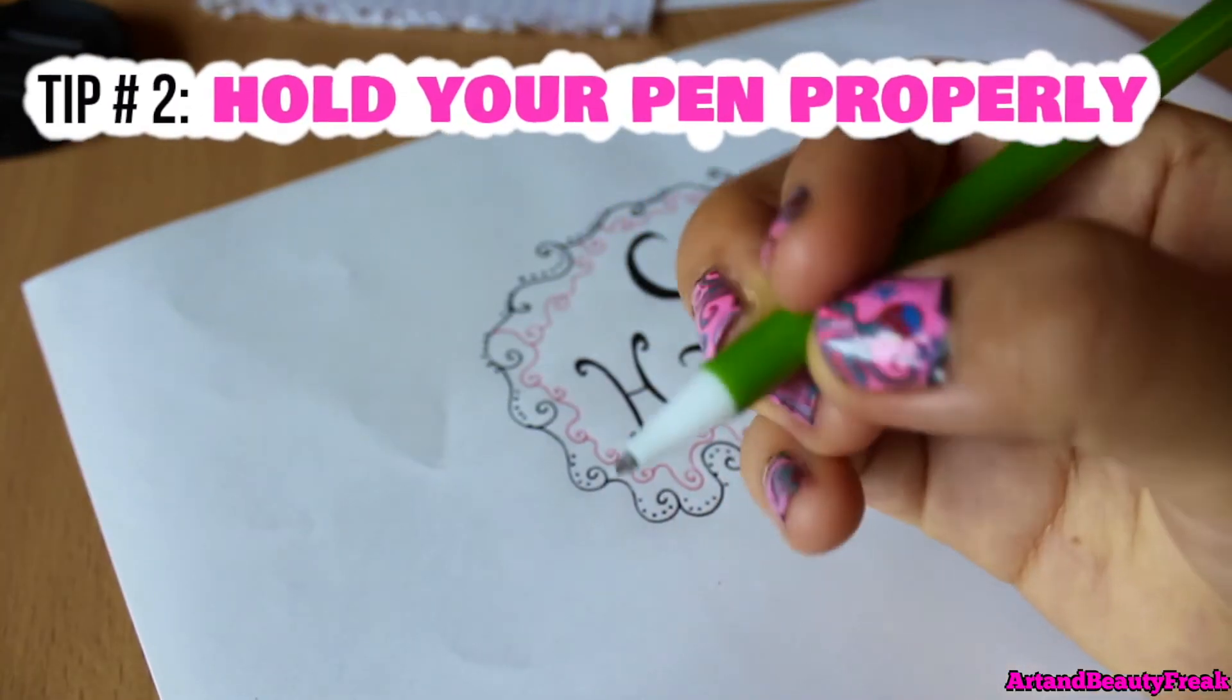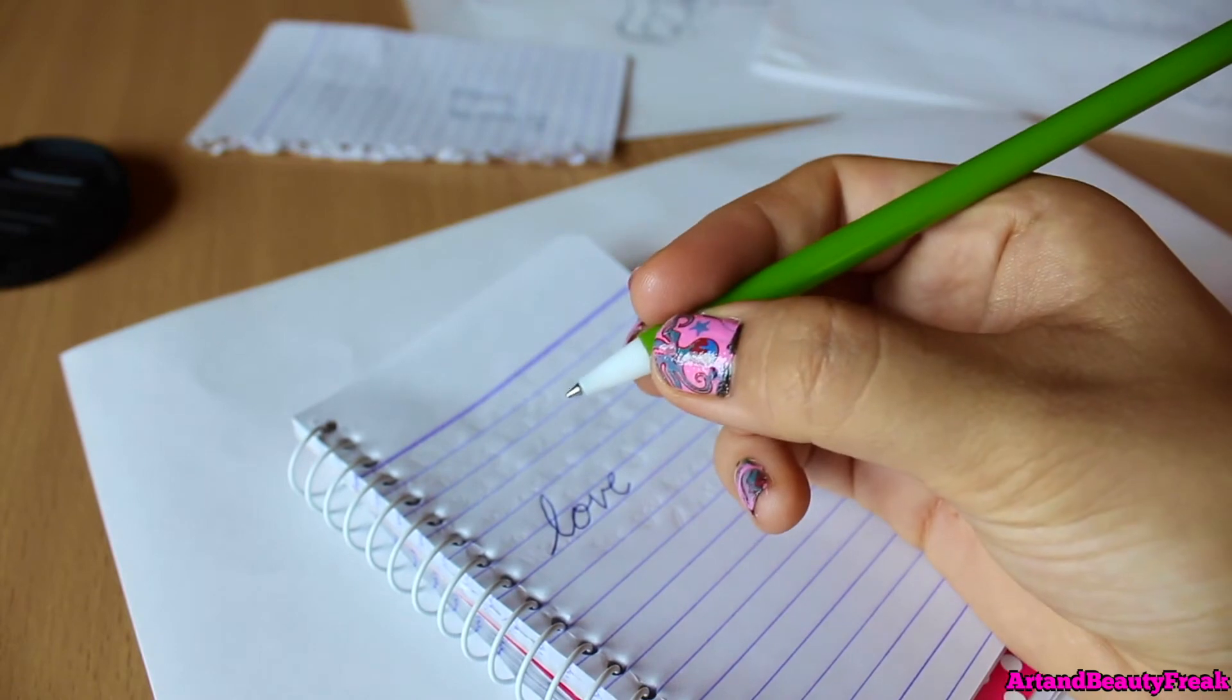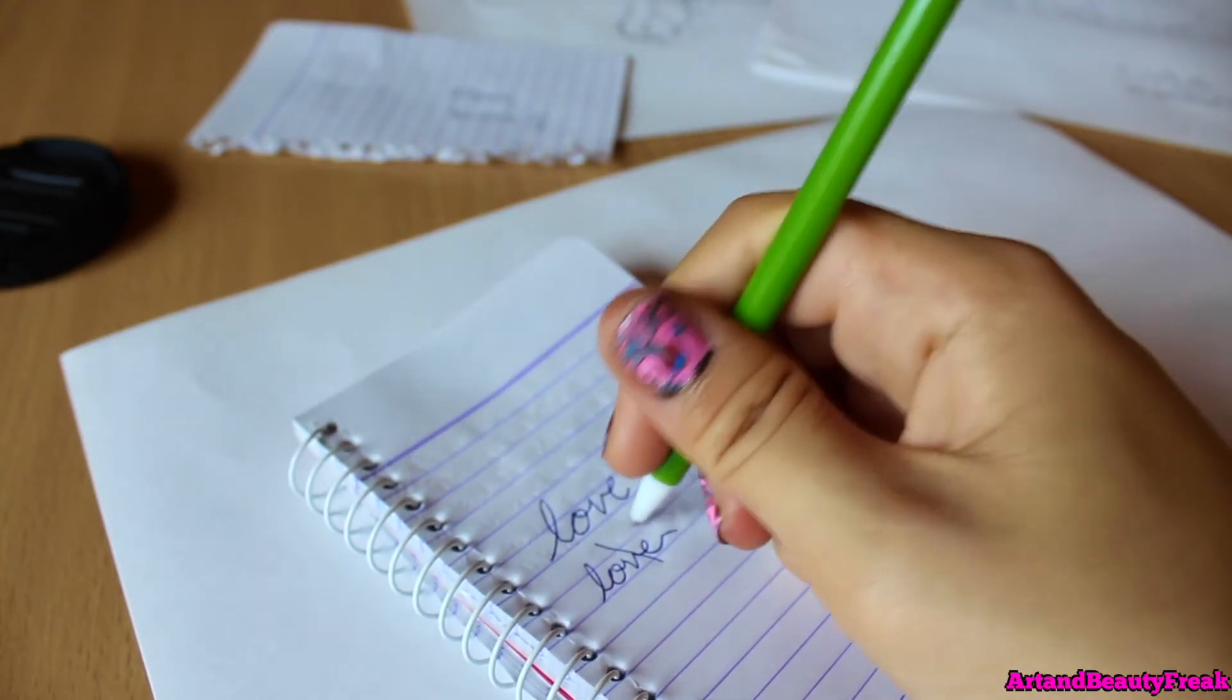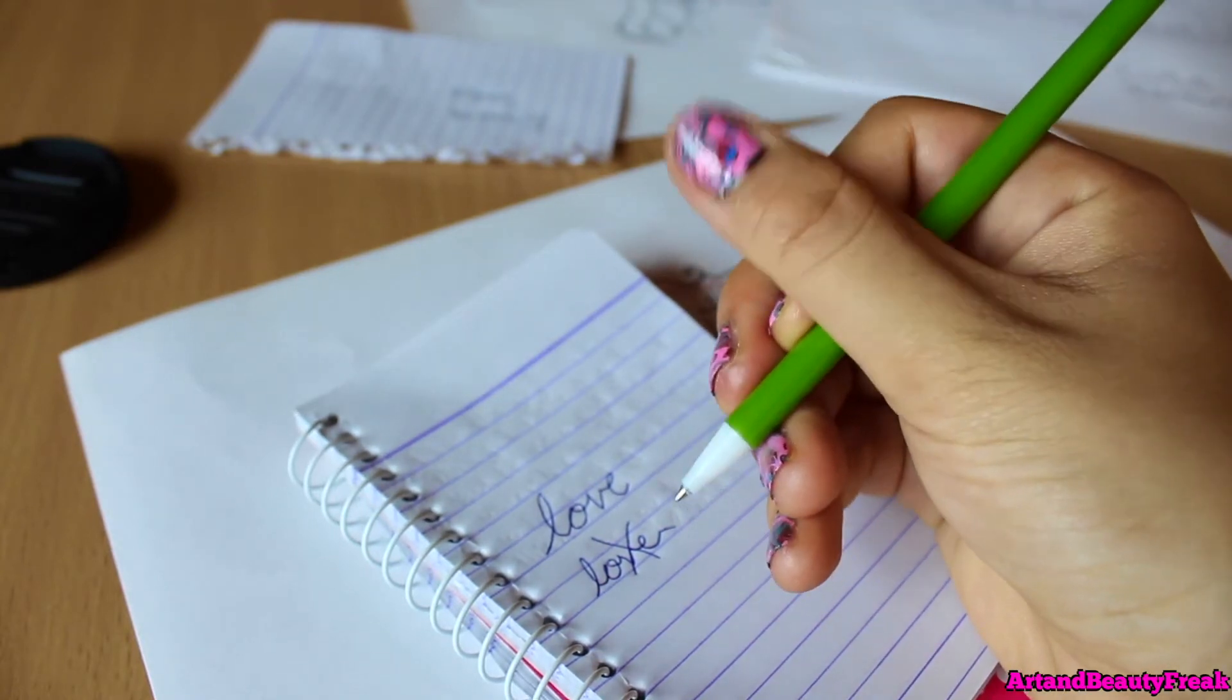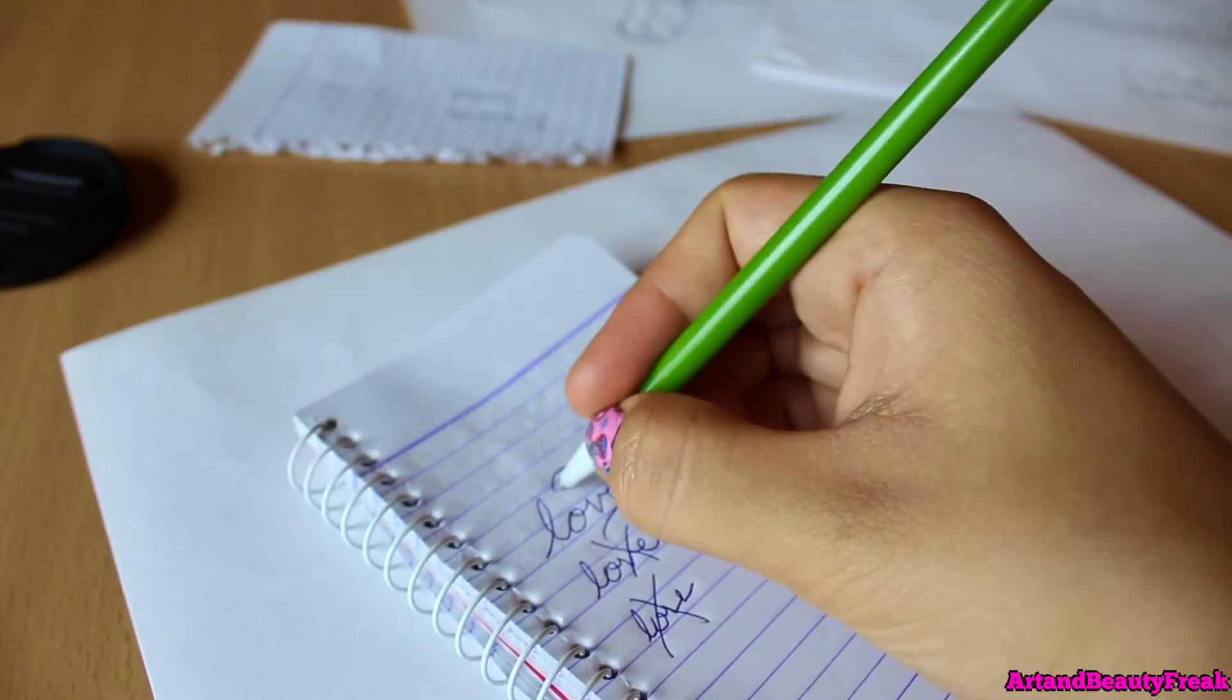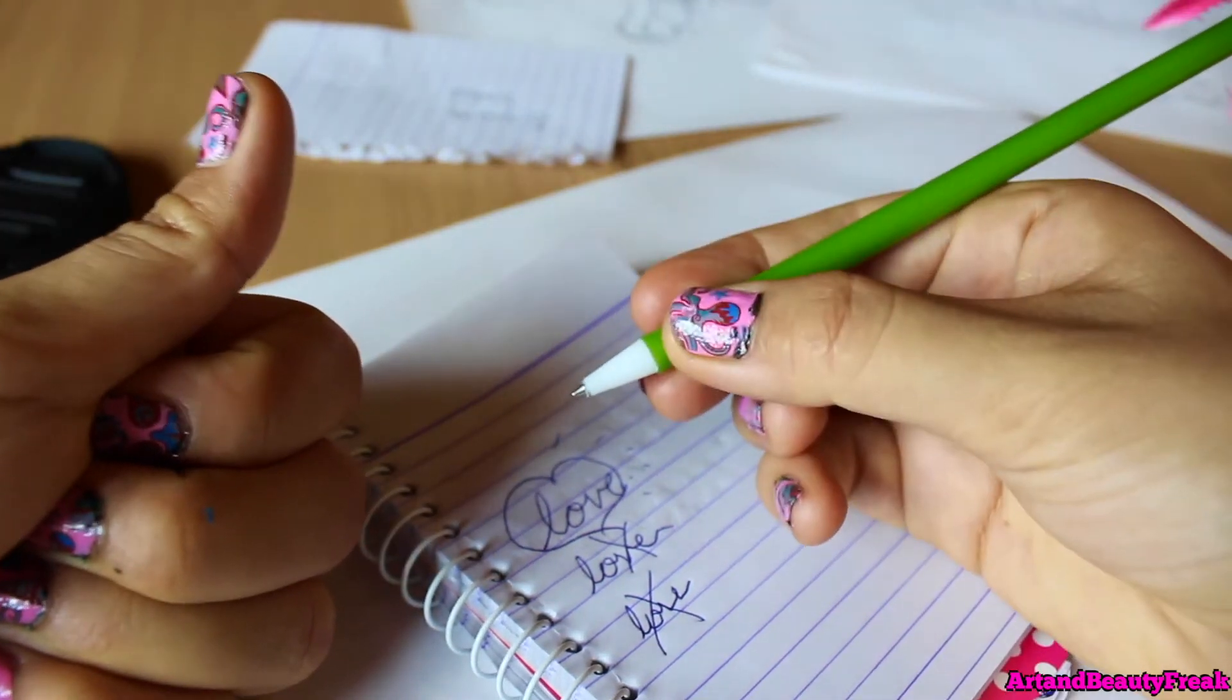Tip number two is to hold your pen properly. When I say this, I don't mean that you have to hold your pen in a particular way, you know the way that teachers in schools tell you or maybe your parents. You should be comfortable with how you're holding your pen, so try out different ways because your handwriting may improve when you change it up. When I was younger I was told to hold it in a specific way and I didn't like it, and my handwriting was really bad. What I did is I changed it up and tried different ways of holding my pen, and when I finally found the way that I wanted to hold my pen, my handwriting improved so much.